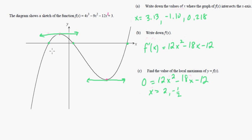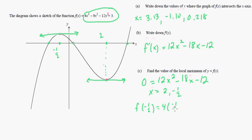They want the local maximum, which is the y-value. So we substitute x = negative one half into f(x): 4 times (−½)³ minus 9 times (−½)² minus 12 times (−½) plus 3. You can enter this in the calculator. The answer is 6.25. So the local maximum is 6.25.